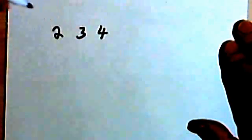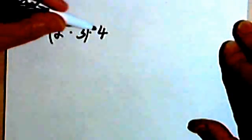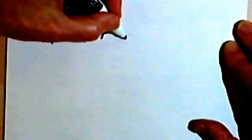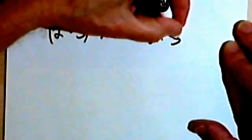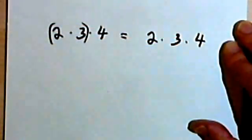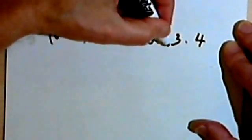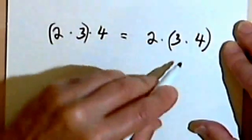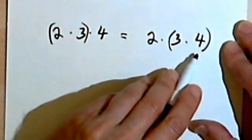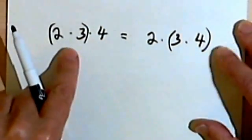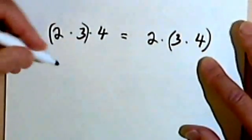We also have an associative property of multiplication. And all that says is if I have 2, 3, and 4, and I want to multiply them, I could multiply the 2 times the 3 first, and then multiply that result by 4. Or I could take my 2, 3, and 4, and multiply the 2 times the product of the 3 and the 4. Once again, these things will be exactly the same. And once again, we can do the same thing with variables.